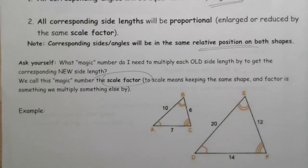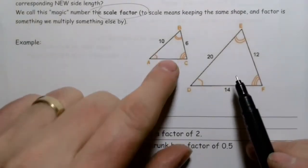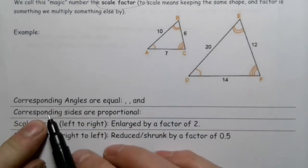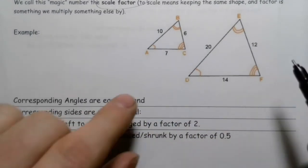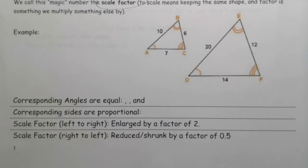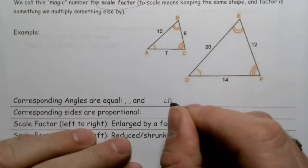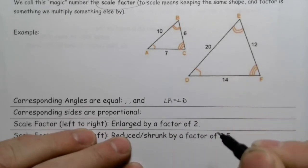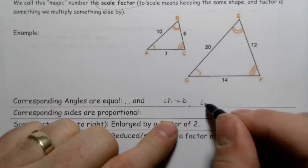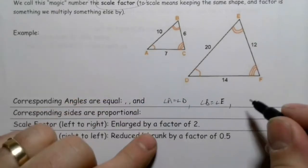Let's look at an example to illustrate this. These two shapes are similar. We identify corresponding angles using the curved tick marks — the number of lines indicates which angles match. So angle A equals angle D, angle B equals angle E, and angle C equals angle F.